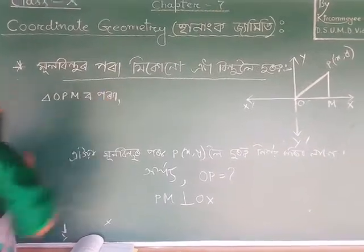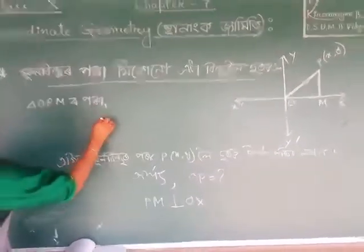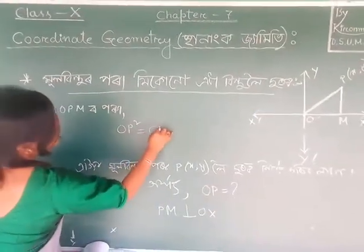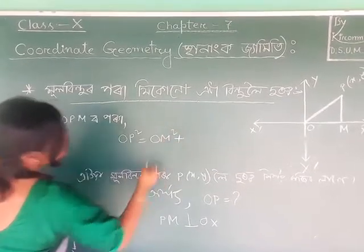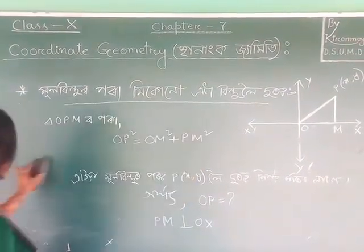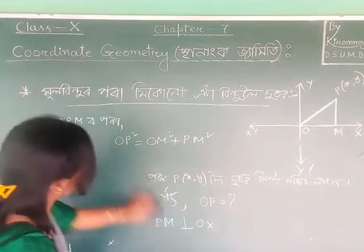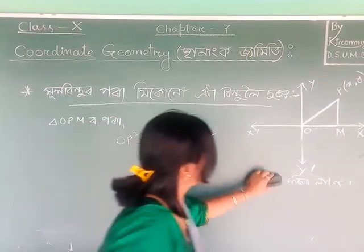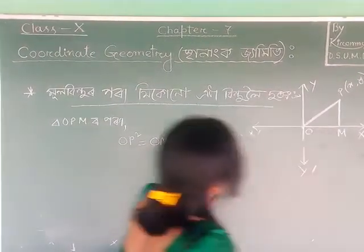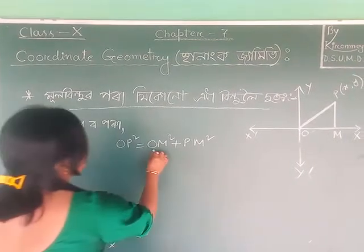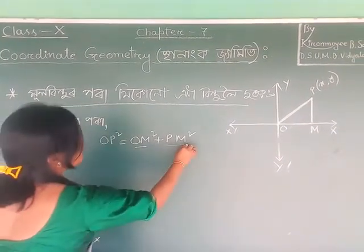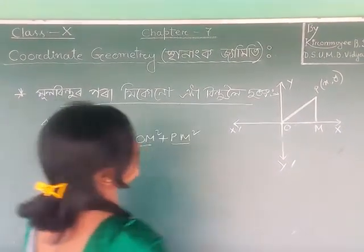Okay — OP square is equal to OM square plus PM square. If you want to get it here — OM or OM, and PM — OM.